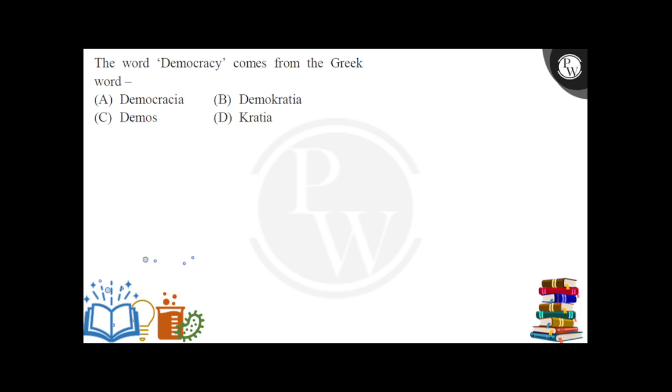This word democracy is derived from the Greek word, which is option number B — demokratia.